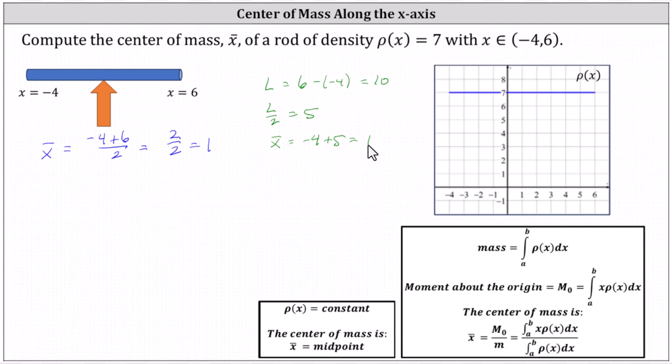But this only works when the density is constant. If the density is not constant, then we determine the center of mass along the x-axis by determining the quotient of the moment about the origin and the mass.